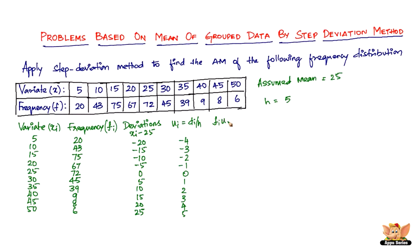Then finally we've got F_I U_I. The easiness will really show when you take the sum of F_I U_I. Now it's going to be simpler: 20 into minus 4 is minus 80, then it's minus 129, minus 150, minus 67, then 0, then you've got 45, then 78, then 27, then 32, and 30.